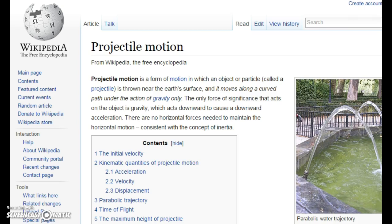It's a form of motion in which an object or particle called a projectile is thrown near the surface and it moves along a curved path under the action of gravity, the only force of significance that acts on the object which acts downward to cause a downward acceleration.